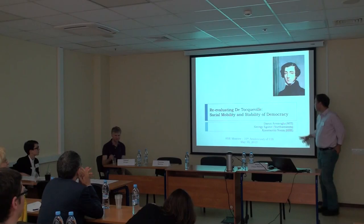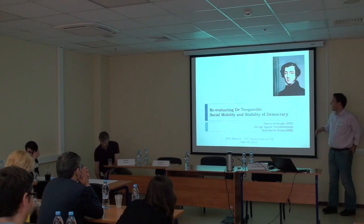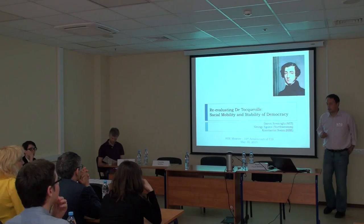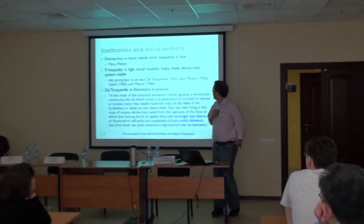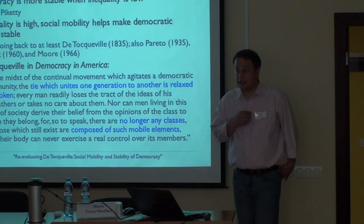Thanks, Misha. This is a joint work with a co-author from MIT and Georgi Yegorov, who is at Northwestern. This is a paper about a hypothesis that links social mobility and stability of democracy. I'll start with a very big question, and then we'll provide our very big answer to this big question. The big question is: what makes democracy stable?